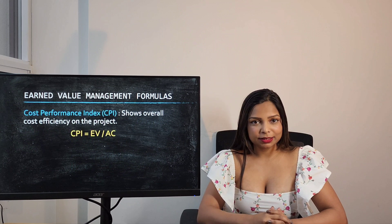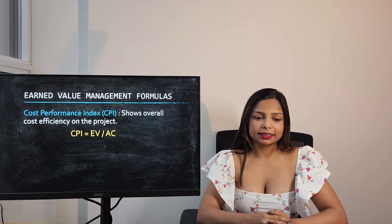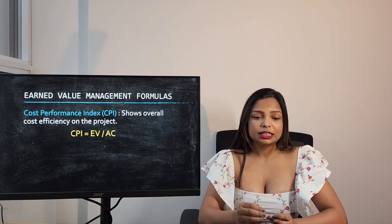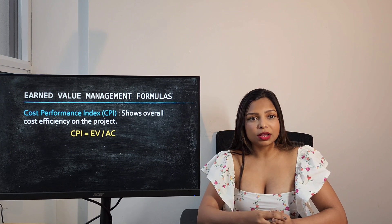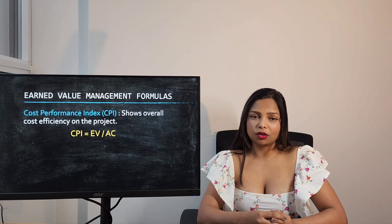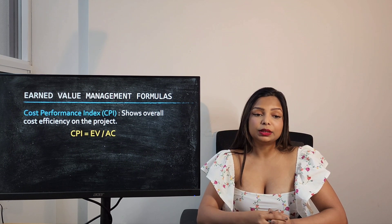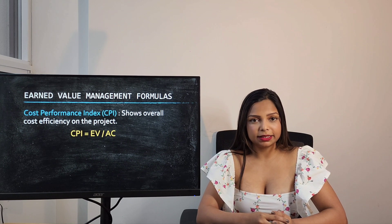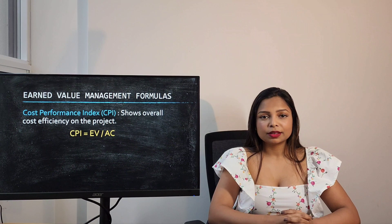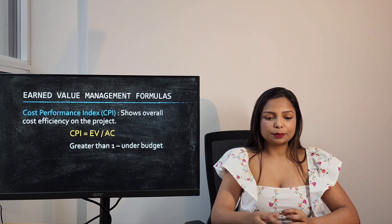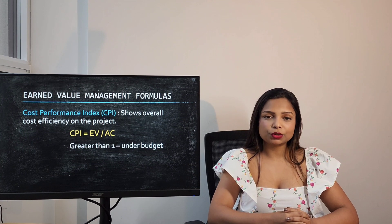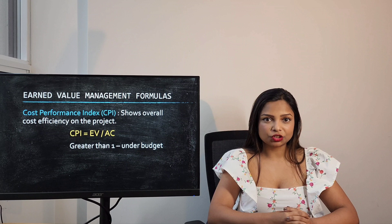Cost Performance Index, or CPI, shows the overall cost efficiency of the project. To calculate CPI the formula is EV divided by AC. If the CPI is greater than 1 it means your project is under budget.